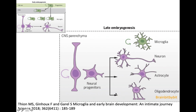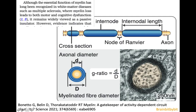Oligodendrocytes are derived from neural progenitors. And sometimes there is also involvement of astrocytes, who have a common progenitor with the oligodendrocyte in PML.